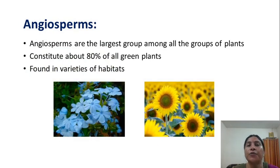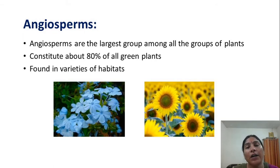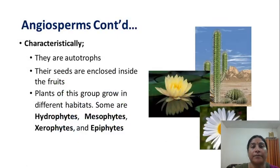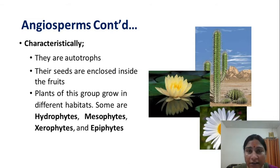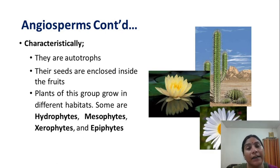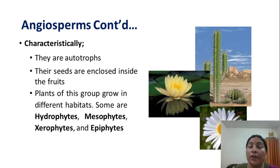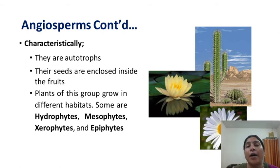Angiosperms are the largest group among all plant groups, constituting about 80% of all green plants and found in a variety of habitats. Angiosperms are autotrophs — 'auto' means self and 'troph' means nourishment — meaning they prepare their own food. Their seeds are always enclosed inside fruits. Plants of this group grow in different habitats: some are hydrophytes, some mesophytes, some xerophytes, and some epiphytes.